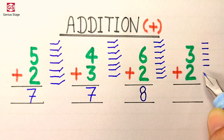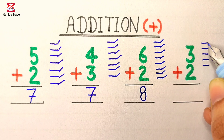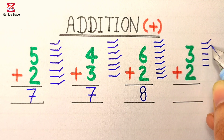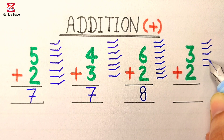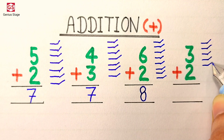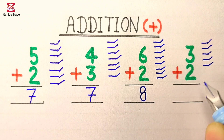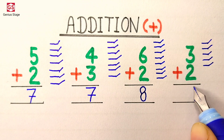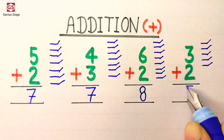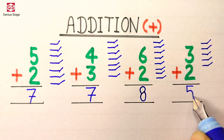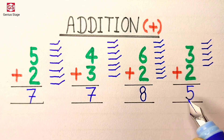Now we will count them all: 1, 2, 3, 4, 5. So the answer to this question is 5.